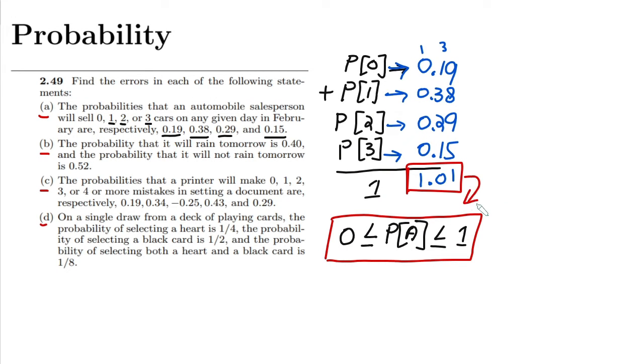1.01 is greater than this range. Therefore, the actual issue here is that all the probabilities are not in this range, so the error here is that this is an incorrect statement.